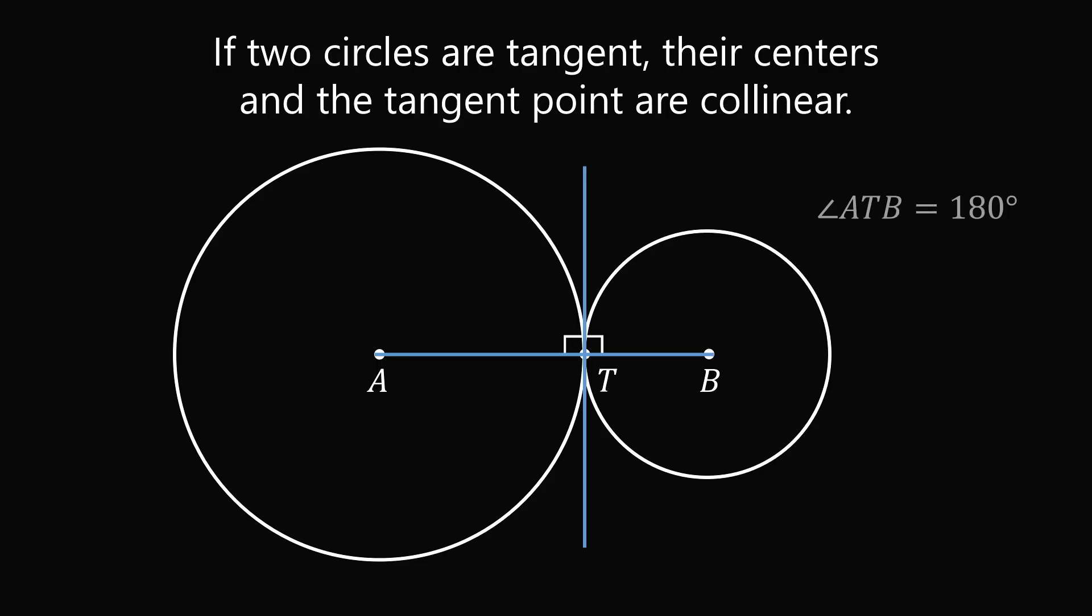So now we have two right angles. So ATB is equal to 90 plus 90, which equals 180 degrees.